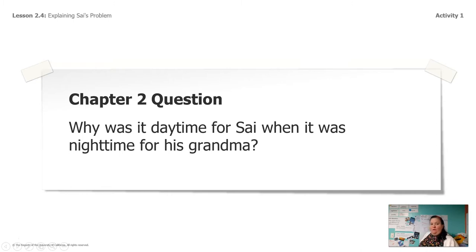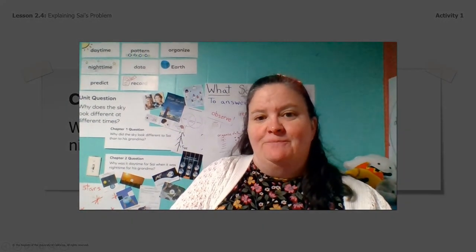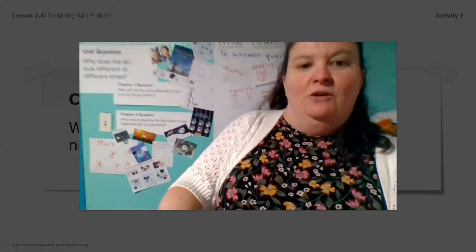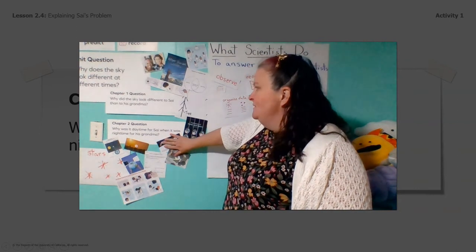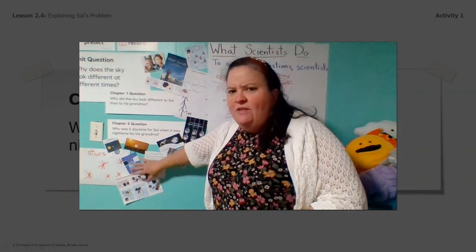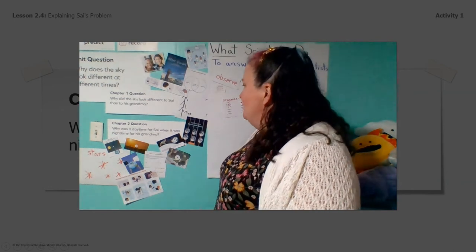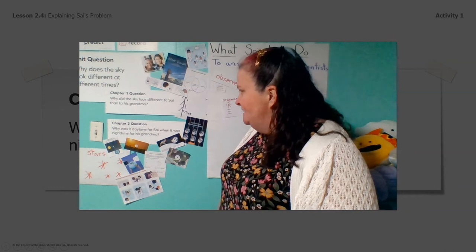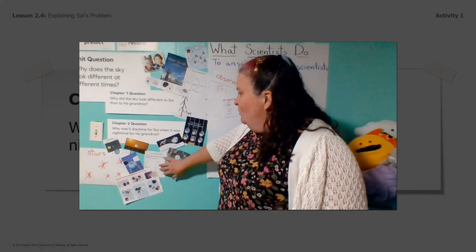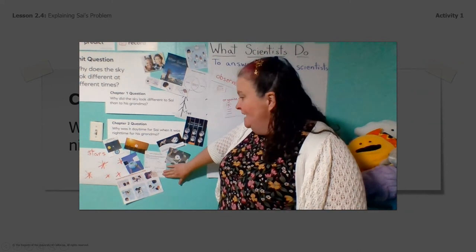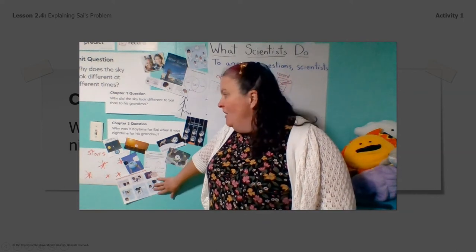The chapter 2 question was: why was it daytime for Psy when it was nighttime for his grandma? Let's take a closer look at what we did to find the answer to that question. We look over here at our wall. We took a closer look at our book 'After Sunset,' we watched a couple videos about the shape of the earth, and we did some pages together about daytime and nighttime. We found day and night on the globe.